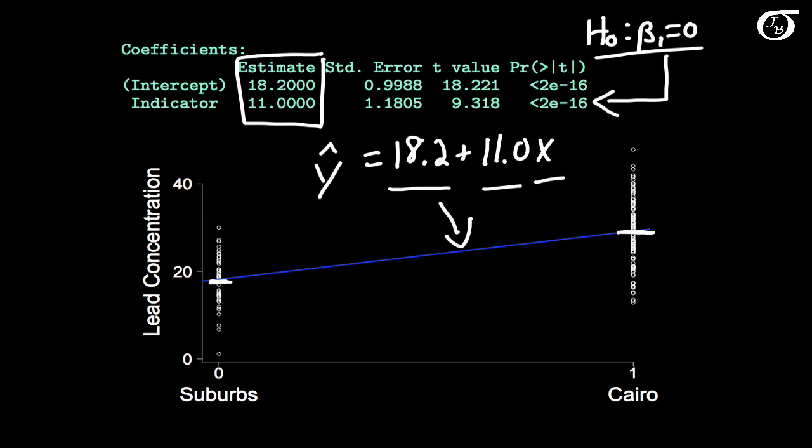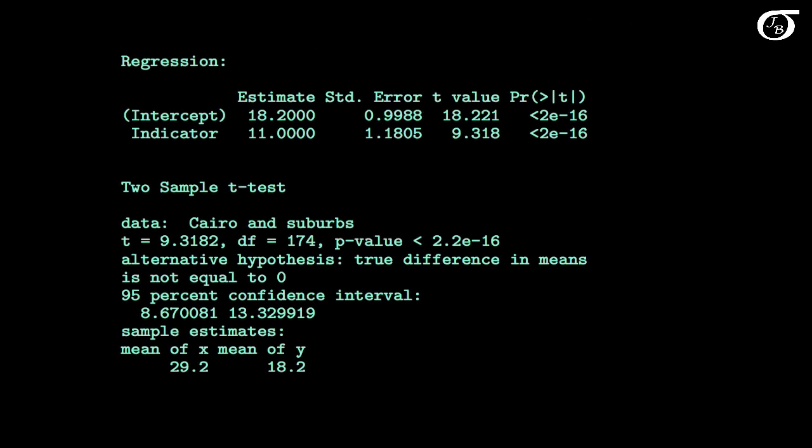Now let's take a look at those two outputs together. Here we have our output from the regression and our output from the pooled variance two sample t-test. Down here we had a mean of the suburbs officers of 18.2, which for our choice of indicator variable is simply equal to the intercept on that regression line.